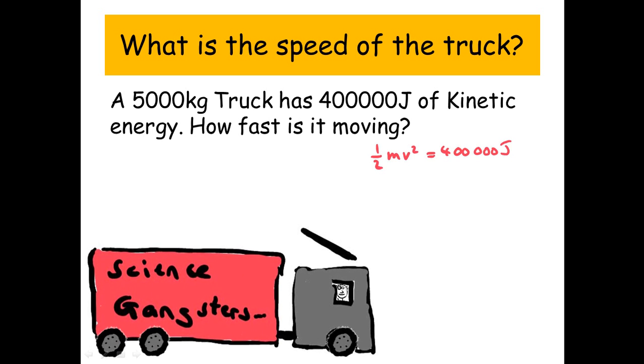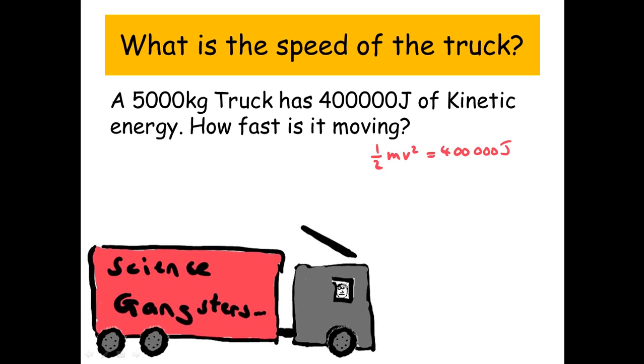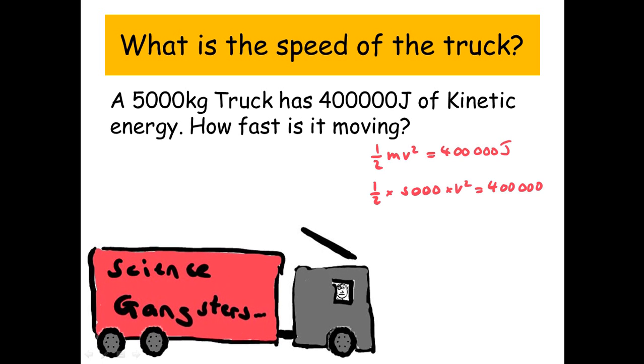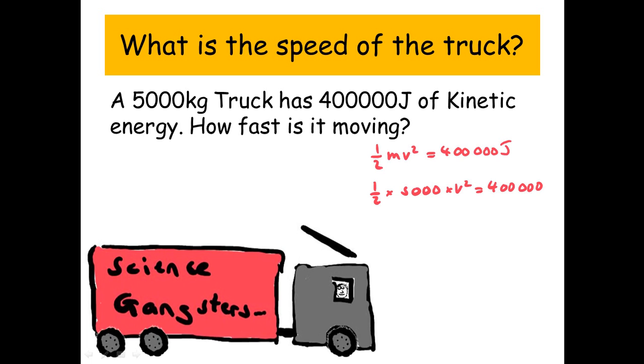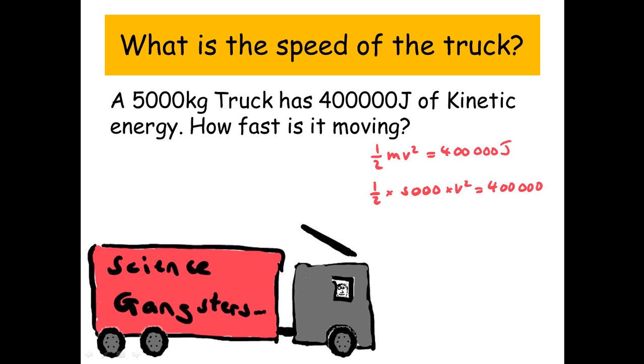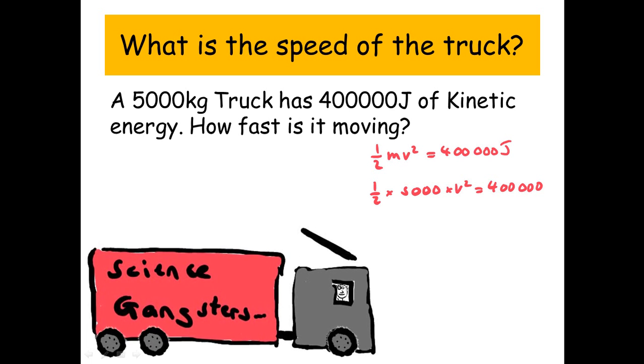So we're going to use half mv squared equals 400,000 joules. Now we know the mass so we can put that in our formula. A half times 5,000 times v squared equals 400,000.